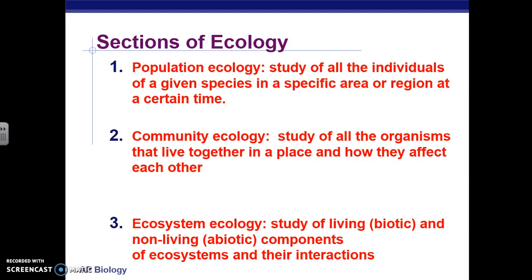There are three sections of ecology that we're going to be studying. There's population ecology, which studies all the individuals of the same species in a given area at a given time. For example, you could have the population of humans in Hartford — that would be an example of a population.